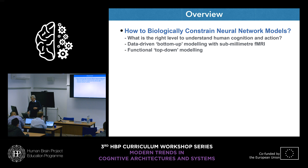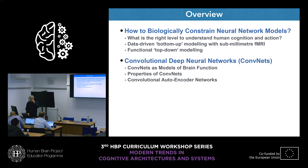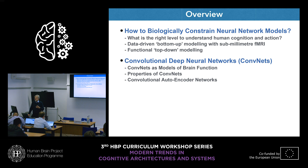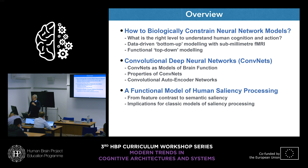After that, I will talk about one way to do this using convolutional deep learning networks as modules for building larger models. I will describe a bit what they can do, and then talk about a specific application of this top-down functional teleological approach, where we applied this to saliency processing. I will show you that despite these networks not being constrained directly by the brain, but only by the task they solve, they mimic very precisely how humans solve saliency tasks.